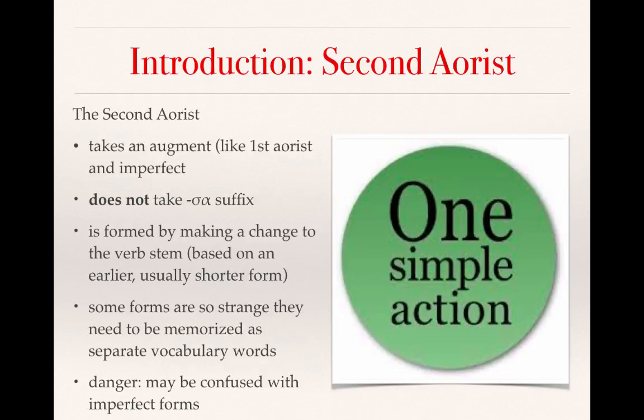A word of warning: the forms of the second aorist can be confused with imperfect forms because the endings are quite similar and they both start with an augment. So if you don't recognize the change to the verb stem, you may get a little confused with the imperfect. Remember that using the glossary or a lexicon is perfectly fine to confirm the form of the verb in question to see if it's imperfect or second aorist.